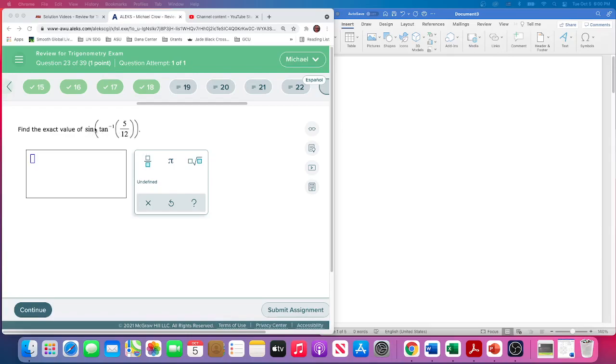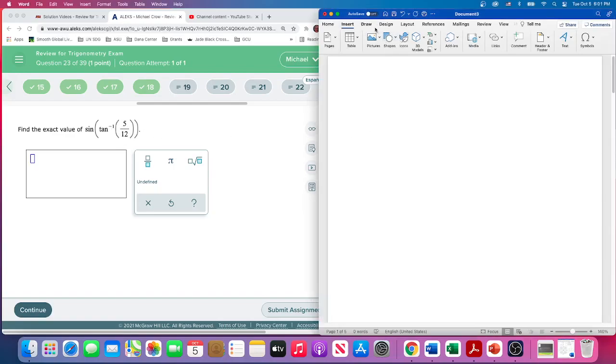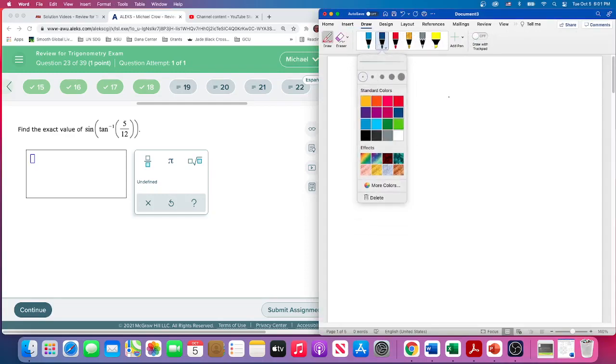However, since we're going to take the sine of that angle, we don't necessarily need to know what the angle is. What we need to do is construct the triangle that would have created the value.